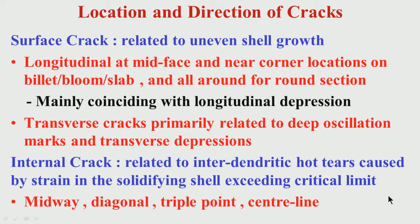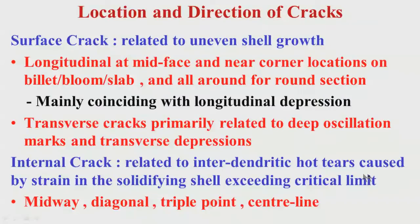At inter-columnar or inter-dendritic locations where strength and ductility are low, crack formation is more probable. There is a high possibility of formation of cracks in those areas. These are inter-dendritic hot tears caused by strain in the solidifying shell. Whenever strain exceeds the limit, you will have crack formation in inter-dendritic areas. The crack can be at midway, at the diagonal, at the triple point, or at the central waterline — the possibilities of crack formation at different locations at the surface and internally are present.